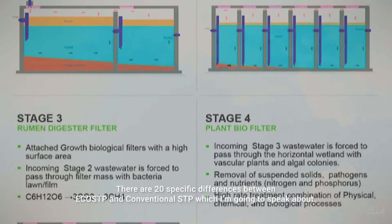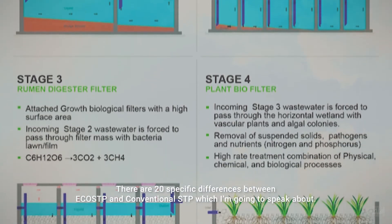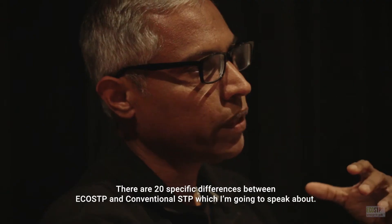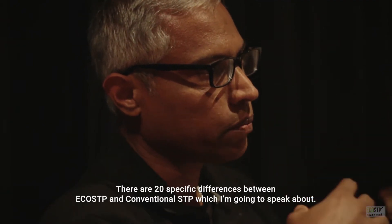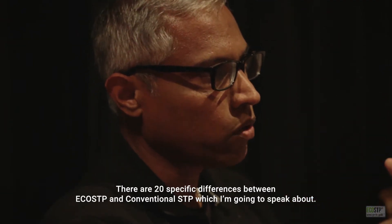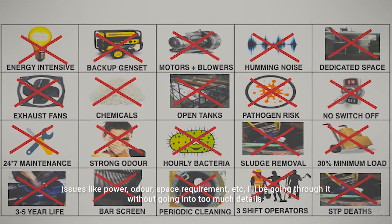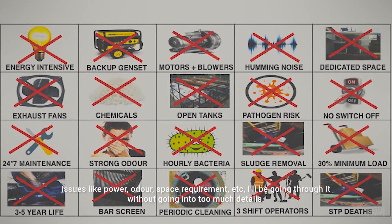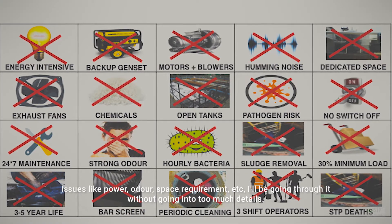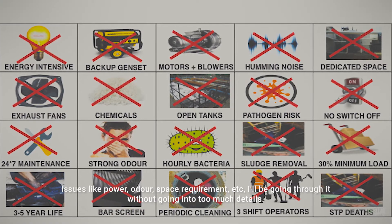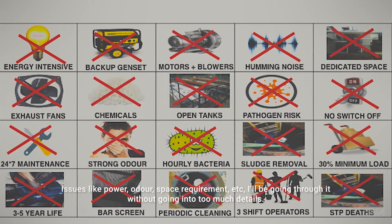There are 20 specific differences between EcoSTP and conventional STP, which I am going to speak about — issues like power, odor, space requirement, etc. I will be going through them without going into too much detail.